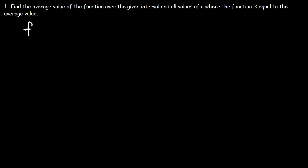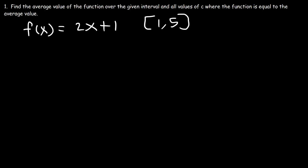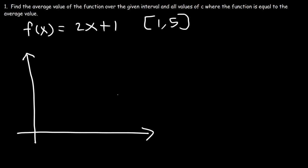Let's say we have a linear function f of x equal to 2x plus 1 over the interval 1 to 5. How can we find the average value of the function over the interval 1 to 5? Let's draw a graph. We have a y-intercept of 1 and a slope of 2, and we're focused on the interval 1 to 5.